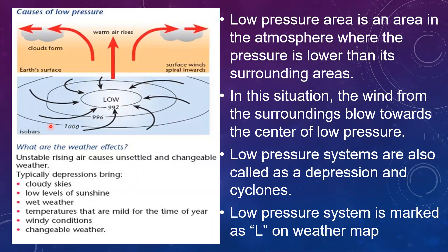Often we hear in the news that low pressure develops in the Bay of Bengal or Arabian Sea. A low pressure area is an area in the atmosphere where the pressure is lower than its surrounding areas. In this situation, wind from surrounding areas blows towards the center of the low pressure. Low pressure systems are called depressions and cyclones. The center of the low pressure system is called the eye of the cyclone. Low pressure is marked as 'L' on the weather map, and since wind always blows from high pressure to low pressure, it moves towards the center of the low pressure system.